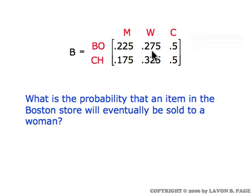The probability that an item in the Boston store will eventually be sold to a woman is 0.275. Now, on average, how long will an item in the Chicago store be held in one of the stores before being sold? This is where we use matrix N, which is 2×2 with rows and columns labeled by non-absorbing states. On average, an item starting in the Chicago store will spend one-fourth of a week in the Boston store and one-and-a-half weeks in the Chicago store before being sold — totaling one-and-three-fourths weeks in inventory.